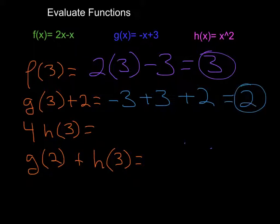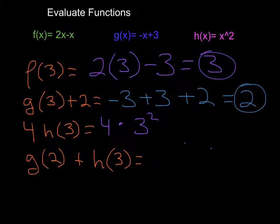I can also have a multiplier out front. So on this one, 4 times h of 3 means 4 being multiplied by h of 3. Writing that out, that's 4 times 3 squared. Following your order of operations, or PEMDAS, you have to do the exponent first. So this is 9, and 4 times 9 is 36.